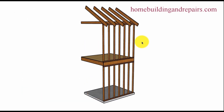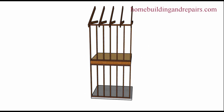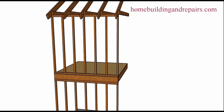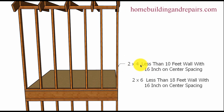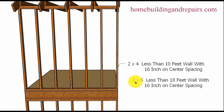Standard wall framing construction for a two-story house — wall framing studs supporting one floor and one roof — with 16-inch on center spacing is going to be two-by-four, same as the previous example. Two-by-six for an 18-foot wall, two-by-four for a 10-foot wall or less. I didn't mention two-by-six for walls less than 18 feet but more than 10 feet because you can always use two-by-six for an 8-foot or 6-foot wall.